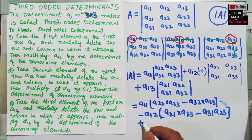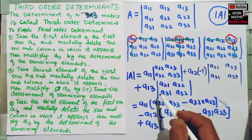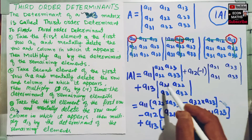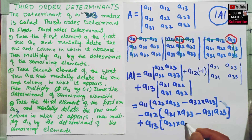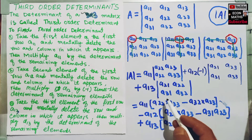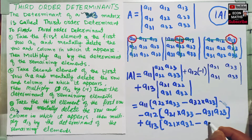Plus A13. Similarly, multiplying the elements on the principal diagonal, that is A21 times A32, minus the product of the elements on the non-principal diagonal, that is A31 times A22.